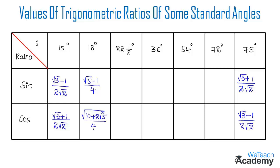Now let us write the values for the standard angle 22 and a half degrees. Sine 22.5° = √(2 − √2) / 2, and the value for cos 22.5° = √(2 + √2) / 2. These values we already proved in our previous videos.